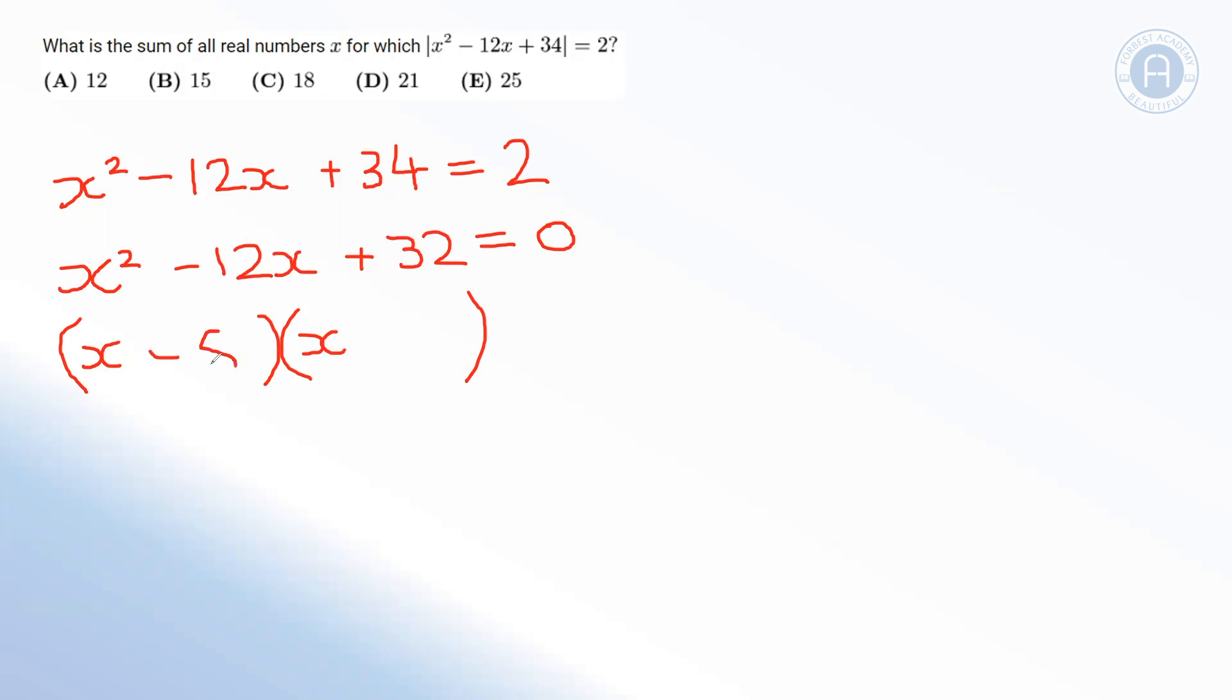So two numbers that multiply together to give 32 and add together to give negative 12, we're going to have negative 8 and negative 4. So if x minus 8 multiplied by x minus 4 equals 0, then one of these two brackets must equal 0. So we have two solutions here. Either x is equal to positive 8, in which case this bracket would equal 0, or x is equal to positive 4, in which case this bracket would equal 0.